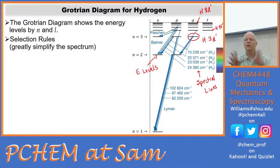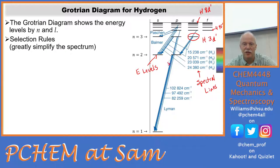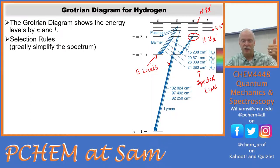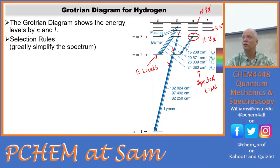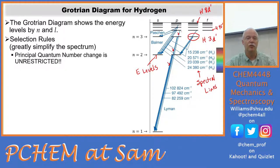Now the selection rules. Looking at this Grotrian diagram, is there any restriction on n? The line from n equals 2 to 1 shows delta n can be 1, but then n equals 3 down to 1, and 4 down to 1 — so it looks like there's no restriction on n, unlike the particle in a box where it was delta n = ±1, 3, 5, 7. The principal quantum number is unrestricted — it can be anything, even 0. A delta n equals 0 transition would be like a 3p to a 3s — no change in n, but a change in l.